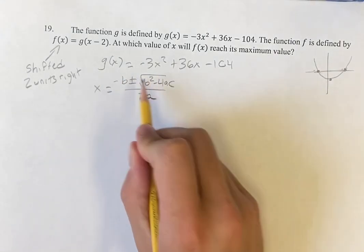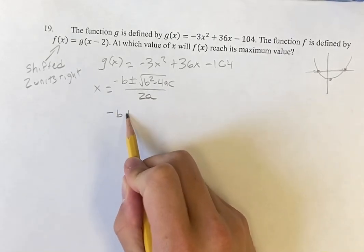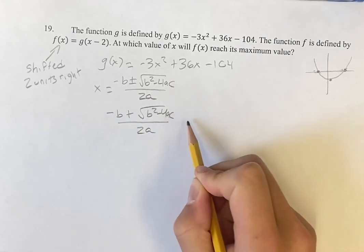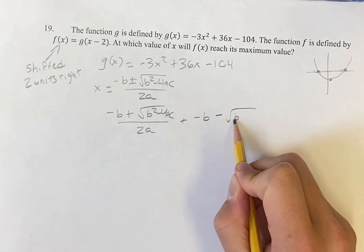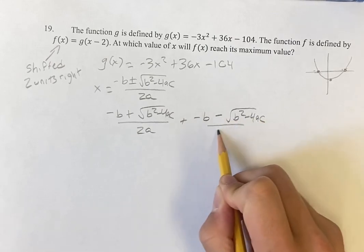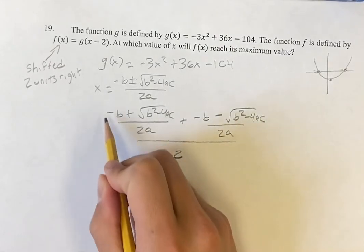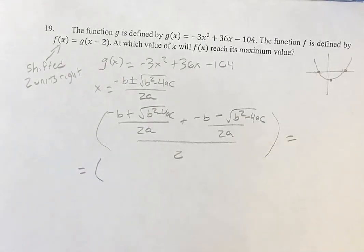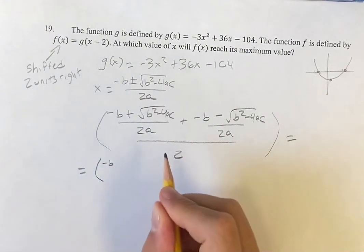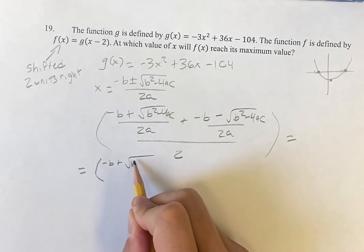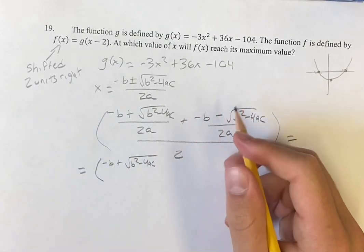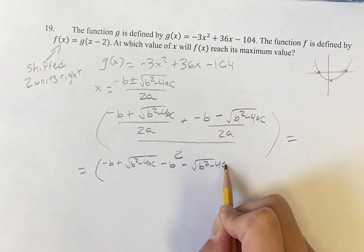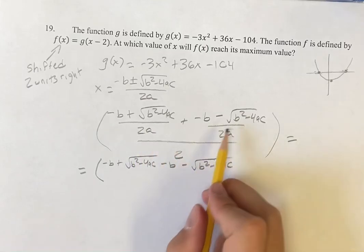Well, if you see this plus or minus, that's going to help us out a lot. So we have negative b plus the square root of b squared minus 4ac over 2a, plus negative b minus the square root of b squared minus 4ac over 2a. So we're adding those, dividing them by 2. So on top, we're going to have negative b plus the square root of b squared minus 4ac, minus b minus the square root of b squared minus 4ac. We can combine these together because they have a common denominator.